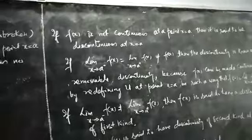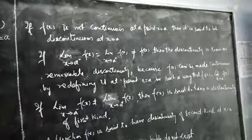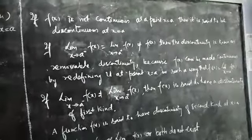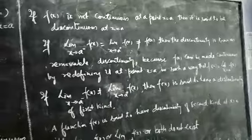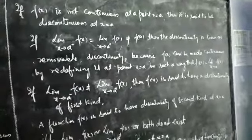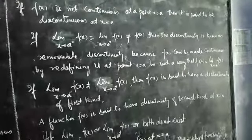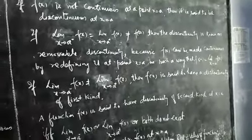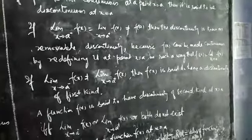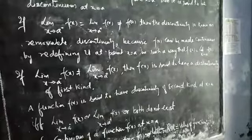If f(x) is not continuous at x equal to a, then it is said to be discontinuous at x equal to a. If limit x→a⁻ f(x) equals limit x→a⁺ f(x) but is not equal to f(a), then the discontinuity is known as removable discontinuity, because f(x) can be made continuous by redefining it at point x equal to a such that f(a) equals the limit x→a f(x).